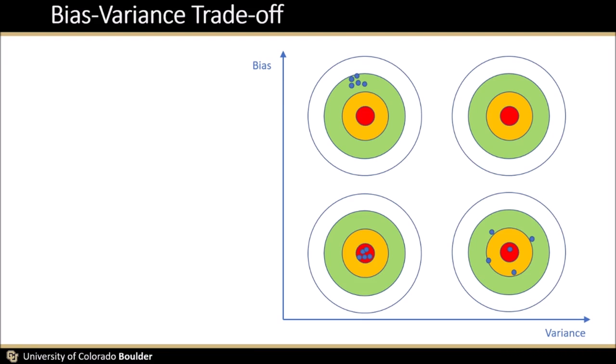On the other hand, if the bullets are quite spread but still well-centered around the target, then we can say it has a low bias and high variance. And as you can imagine, if bullets are not close to the center but also have a large spread, then we say it's a high bias and high variance.